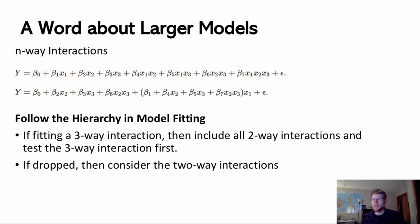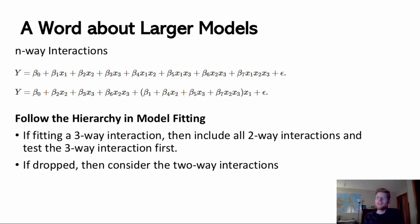As a preview of what's coming, consider what happens when we have larger and larger models. We can fit interaction terms to any predictors we have. We've talked about one numeric predictor and one categorical predictor split into three dummy variables, but what if we have two, three, four, or five numeric predictors, or multiple categorical predictors? This gets really complicated really quickly. We don't want to fit really complicated models unless it truly makes sense to do so.